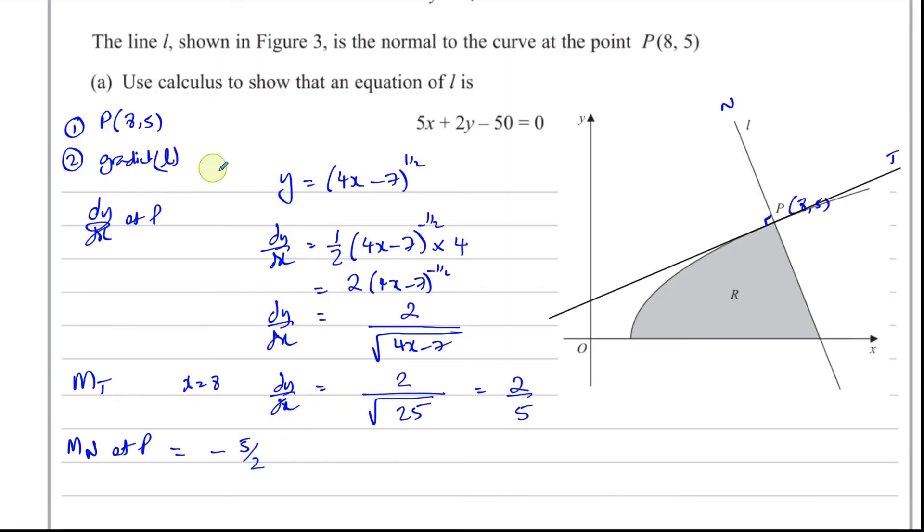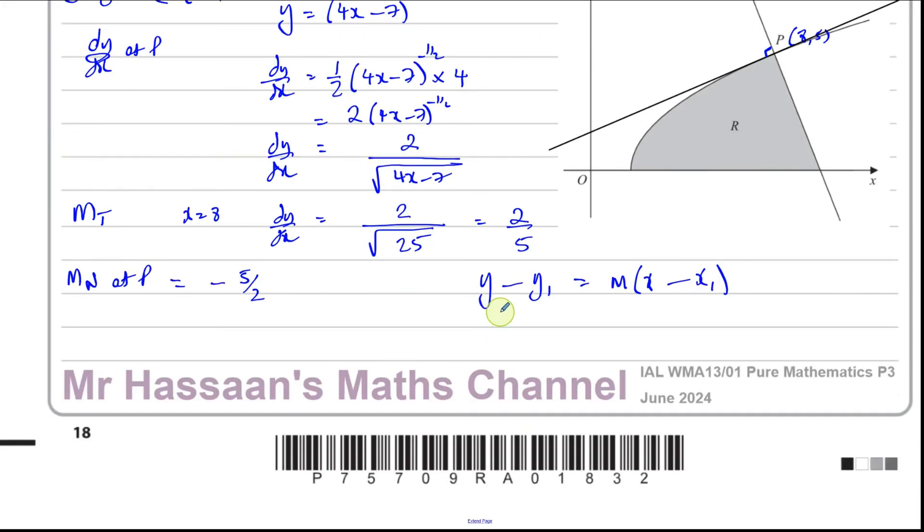So now we have the gradient as minus 5 over 2, and we have the coordinates of the point. So we can use y minus y1 equals m times x minus x1. That's far easier to use in a case like this. So you have y minus, and we have the point, remember it was (8, 5). So y minus 5 equals m, which is minus 5 over 2 times x minus 8. Multiply both sides by 2. You have 2y minus 10 equals minus 5x plus 40.